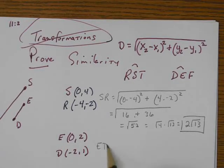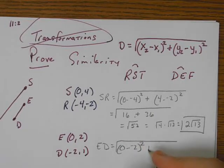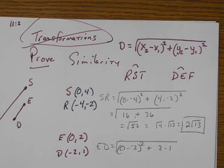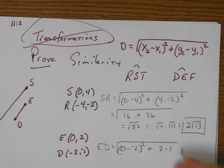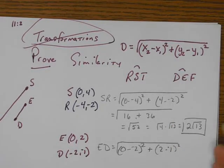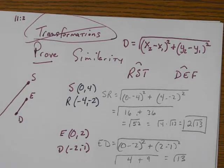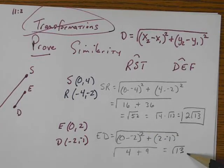All right, let's do ED. 0 minus negative 2 squared, 2 minus 1, is that a negative 1? Okay, I wrote it wrong. All right, so now let's simplify. 0 minus negative 2 is positive 2, squared is 4. 2 minus negative 1 is 3, squared is 9, and so we have the square root of 13. Is everyone with me using the distance formula twice to find square root of 52 and the square root of 13?